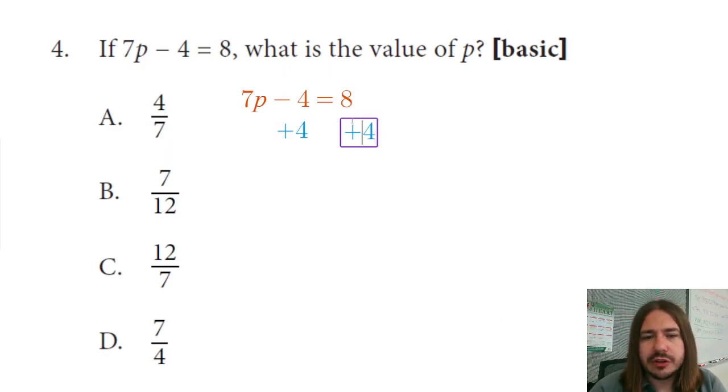Ultimately, what we're trying to do here is isolate p. So any numbers we see on the same side of the equation as p need to be dealt with. We need to get rid of this minus 4, so we're going to add 4.